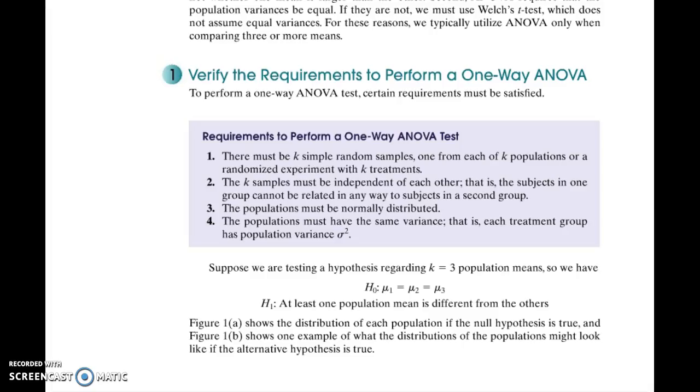Now I want to move on to talking about one-way ANOVA. ANOVA stands for analysis of variance. This is the method we use to compare three or more means. Our null hypothesis is always going to be that all the means are equal. Our alternative hypothesis is that at least one of them is different from the others. We're not specifically saying which one's different, but that at least one is different.